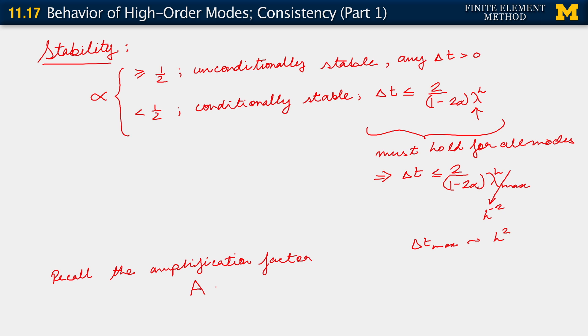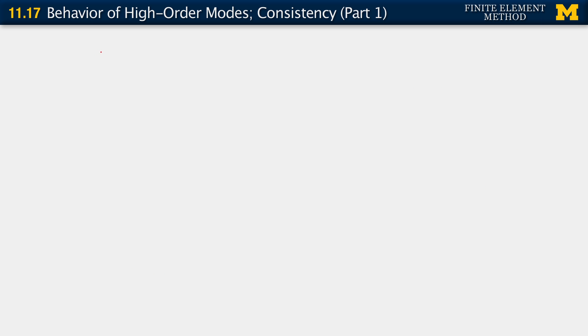And that is something we denoted as a. And if I recall correctly, a is equal to 1 minus 1 minus alpha delta t lambda h divided by 1 plus alpha delta t lambda h. And we recall also how it applies to our algorithmic problem. We see that what we have is that d n plus 1 is equal to a d n.